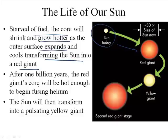It will kind of blossom up to a red giant. After about a billion years, the red giant's core will be hot enough to begin fusing helium. Okay, so now it's warmer, it's going to fuse helium. And then it will transform itself into a pulsating yellow giant, as you can see.